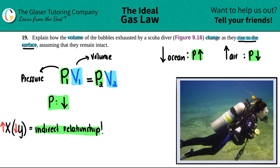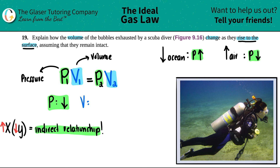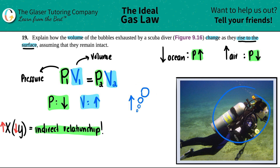If the pressure is dropping and this is an indirect relationship, the volume of those bubbles has to increase. So as you come up to the surface, the bubbles get bigger and bigger. As you go down, they get smaller and smaller. Looking at the figure, the scuba diver is near the floor and the bubbles are barely visible — but as they rise, the bubbles grow larger and larger.